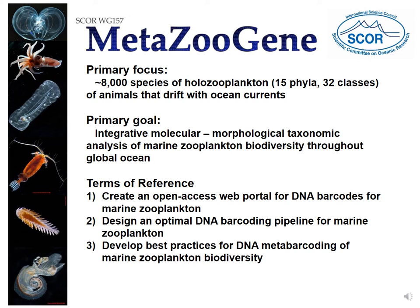MetaZoGene has a primary focus on the whole of zooplankton — those animals that drift with the ocean currents. Our primary goal is integrative molecular morphological taxonomic analysis of marine zooplankton diversity throughout the global ocean. Our terms of reference are to create an open access web portal for DNA barcodes, design an optimal DNA barcoding pipeline, and to develop best practices for DNA metabarcoding of zooplankton diversity.